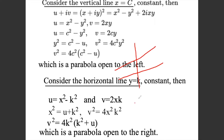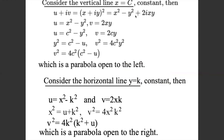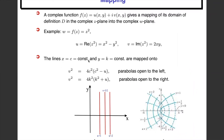So in the z-plane, the horizontal line y = k maps under w = z² to a right-opening parabola in the w-plane. To summarize: the vertical line x = c maps to v² = 4c²(c² − u), a left-opening parabola, and the horizontal line y = k maps to v² = 4k²(k² + u), a right-opening parabola.